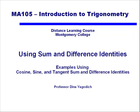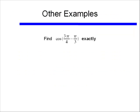This video continues with the sum and difference identities, using some different examples to demonstrate how to use these identities. Before we looked at things like finding cosine of 105 degrees exactly. But we could also ask the question like this: find cosine of 3 pi over 4 minus pi over 3, exactly.